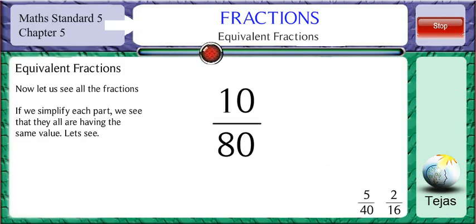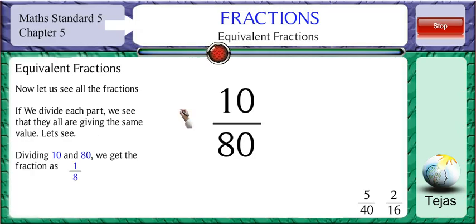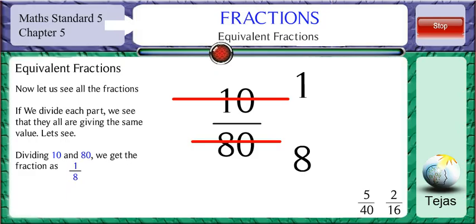Now 10 and 80 both are divisible by 10. So dividing the numerator and the denominator by 10, we get 10 ones are 10, 10 eights are 80, so 1 by 8.